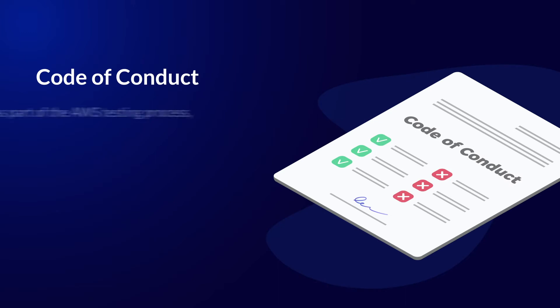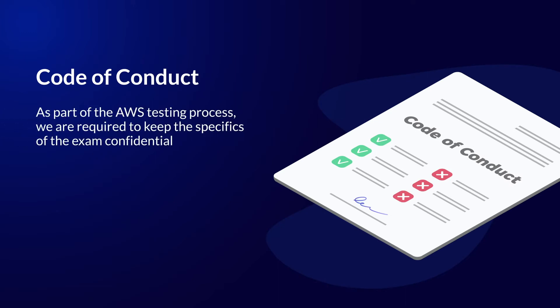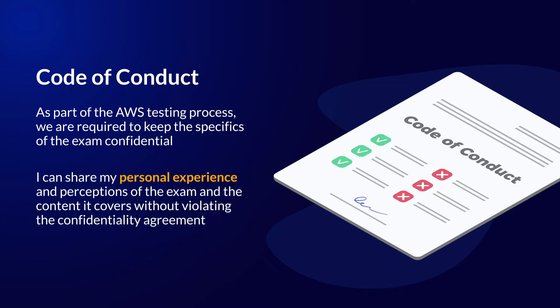Before I start, I need to be clear about something. As part of the AWS testing process, everyone has to agree to a code of conduct, and as part of this agreement, we are required to keep the specifics of the exam confidential. Violation of this agreement can result in the loss of certification and its related benefits, and I'm not willing to put this at risk. This means I cannot share detailed information about exam questions — it would be cheating and would devalue the certification. That said, I believe I can share my personal experience and perceptions of the exam and the content it covers without violating the confidentiality agreement.